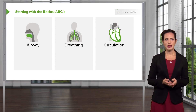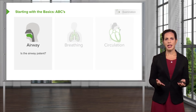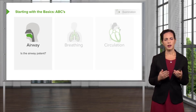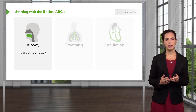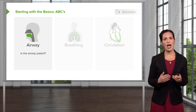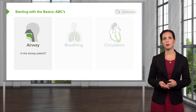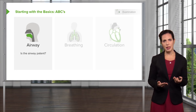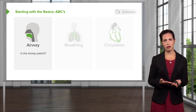When talking about the ABCs, first we start with the airway. We want to ask: is the airway patent? Does the patient have anything occluding their airway? Do they have swelling in their airway? An easy way to assess this is to ask the patient to speak — patients who are able to speak generally have a patent airway. We also think about whether the patient is able to protect their airway, meaning if they were to vomit or have a lot of secretions, would they be able to handle those?